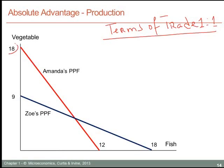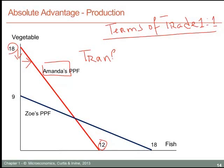When Amanda produces vegetables, she allocates all of her time to the production of vegetables and could produce 18 units. Or, she could allocate all of her time to the production of fish and produce 12 units. This tells us that if Amanda were to reduce the time she allocates to the production of vegetables and reallocate it to fish, she would reduce her vegetable production by three units for every two units of fish produced. So for Amanda, her transformation rate — another new term —